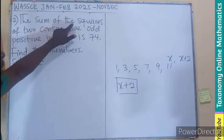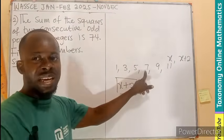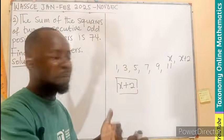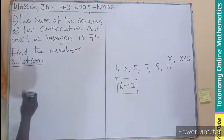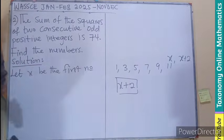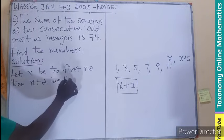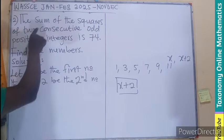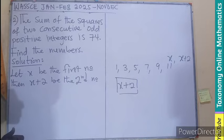We are looking for the sum of the squares of 2 consecutive numbers. Consecutive means that if I think of 1, the next will be 3; if I think of 9, the next will be 11. They follow each other without a break. Since we don't know the exact number, we represent it with a variable. Let X be the first number, then X plus 2 will be the second odd number. The result should be 74.